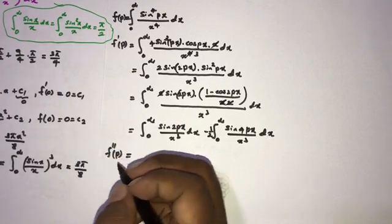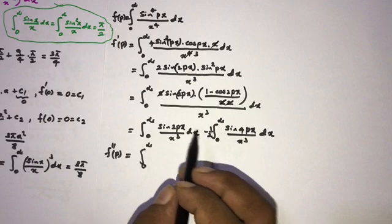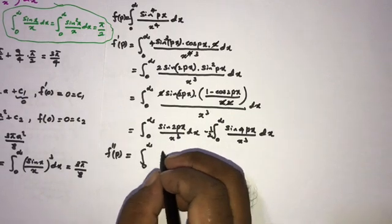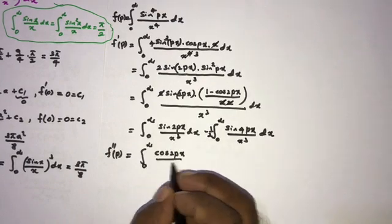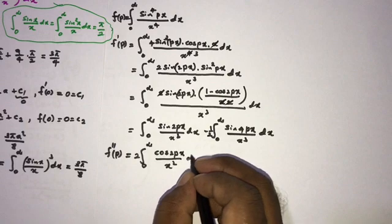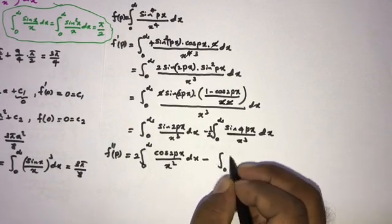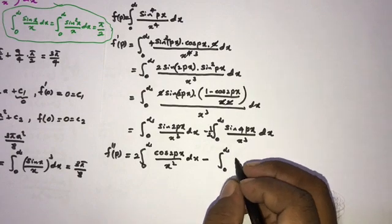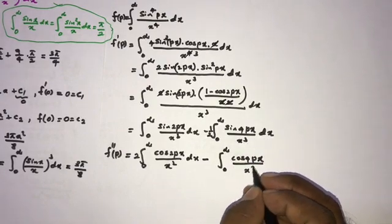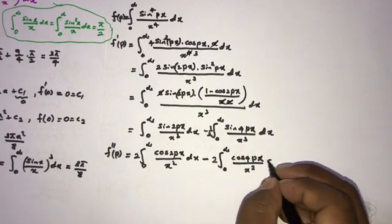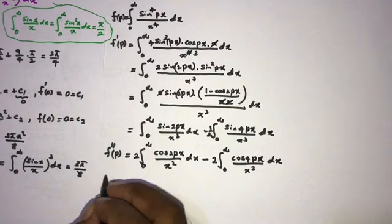Differentiating again, f''(p) = ∫₀^∞ cos(2px)·2x / x³ dx − (1/2)∫₀^∞ cos(4px)·4x / x³ dx. After cancellation: f''(p) = 2∫₀^∞ cos(2px)/x² dx − 2∫₀^∞ cos(4px)/x² dx.